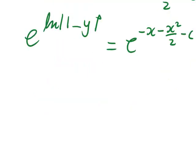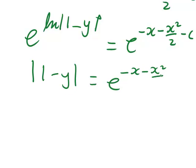At this stage, since e and the natural log are inverses of each other, they cancel, leaving us with |1 minus y| equals e^(−x − x²/2 − c).